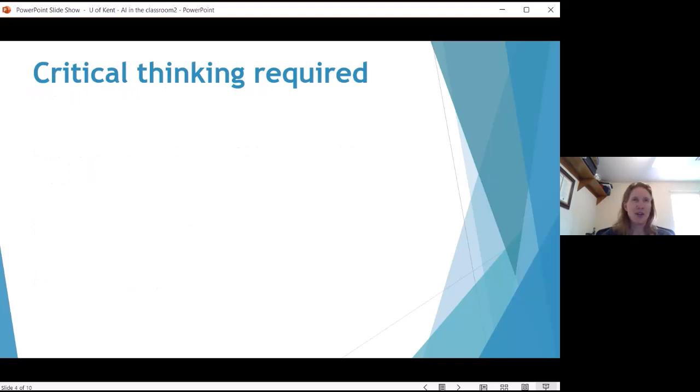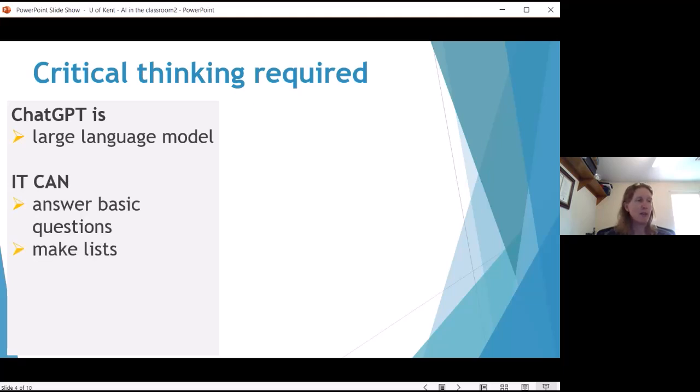So we remember critical thinking is required. We've learned that today very heavily. In each course, I explain that ChatGPT is a large language model, not a true artificial intelligence. It's basically a massive predictive text builder, learning what output should look like, and then building output based on those rules. I bring in examples of the ChatGPT output and we look at what the bot can and can't do well. So it can answer basic questions, make lists, write and summarize text, and write computer codes.